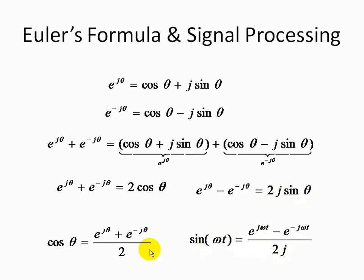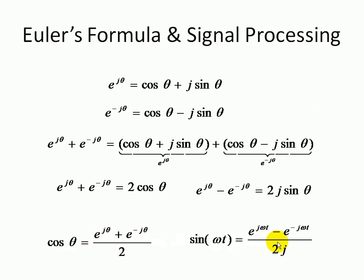These are alternate forms of Euler's formula. Cosine theta can be expressed as a weighted sum of two complex exponentials, and sine omega t can similarly be expressed as a weighted difference of complex exponentials, where the coefficients in front of the complex exponentials are imaginary numbers.